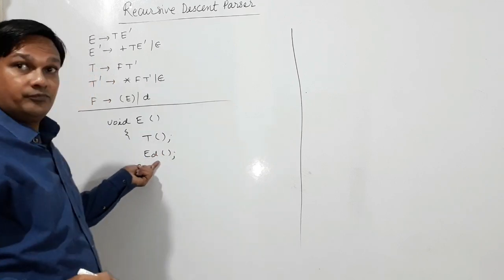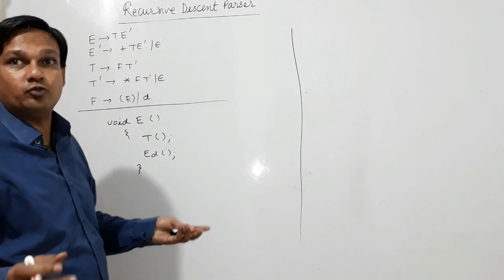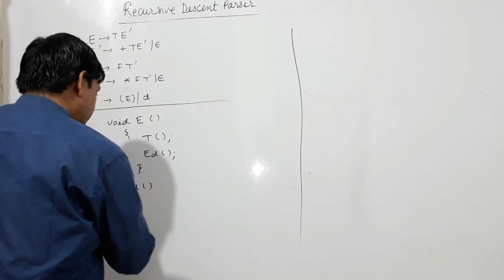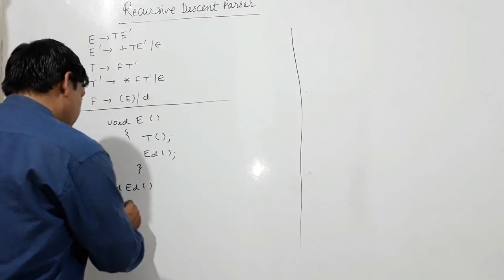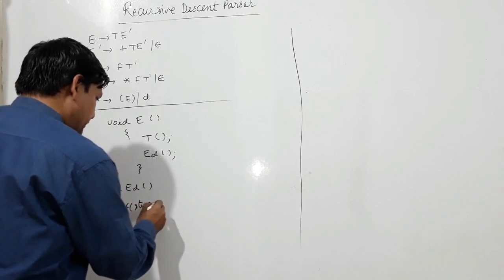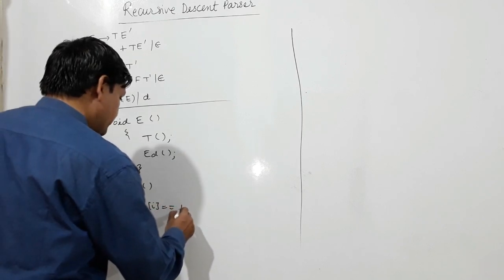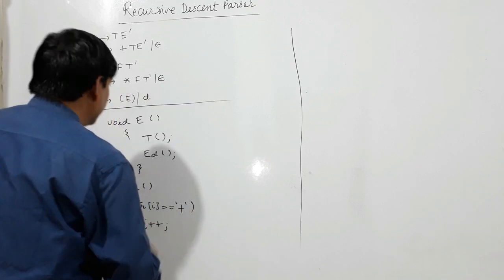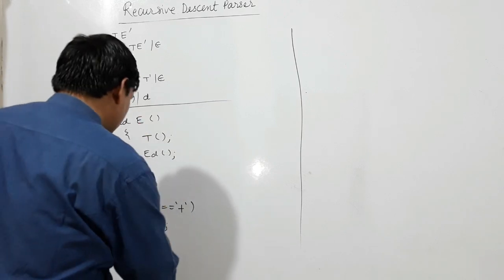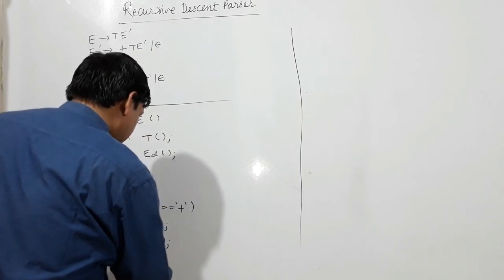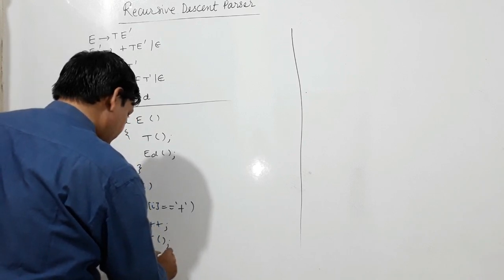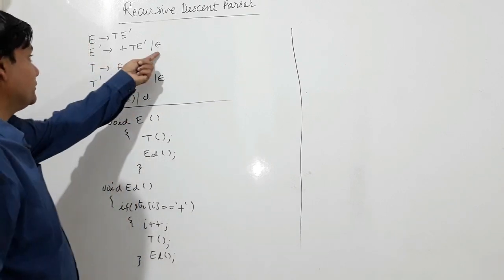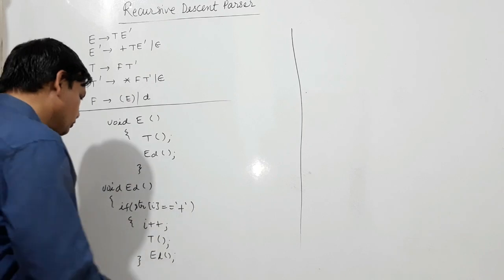I'm using ED here because dash is never used in identifiers. So what ED is doing, void ED. If str i is equal to plus, if starting with plus it is increasing the value str i and is calling T, and T dash ED. If it's not starting with plus, so it will be replaced with epsilon, so no need to write anything, else it's okay.